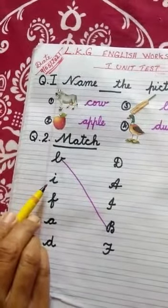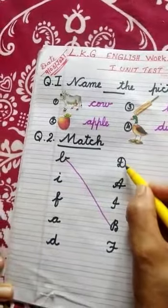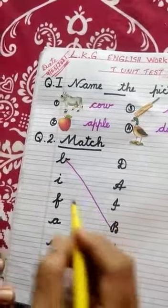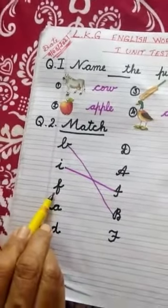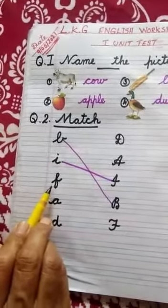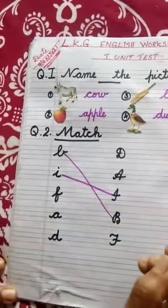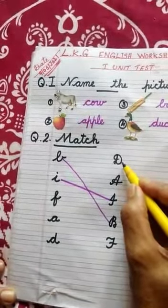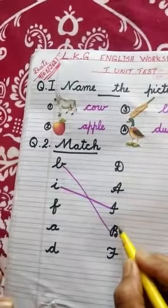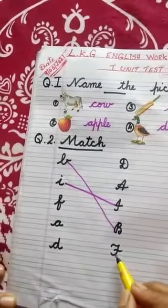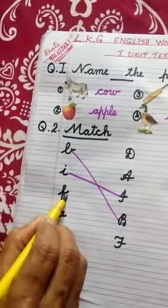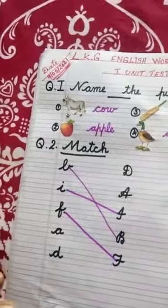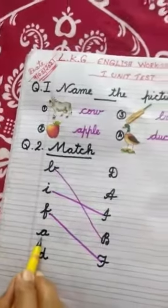Then next: small letter I — where is capital letter I? Search it. Yes, this is capital letter I — draw a line and match it. Then next letter: small letter F — where is capital letter F? This is capital letter F. Yes, this is capital letter F.